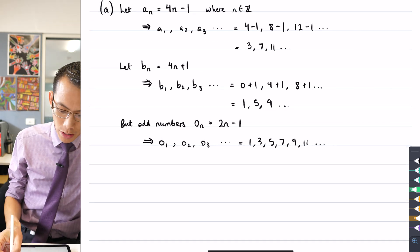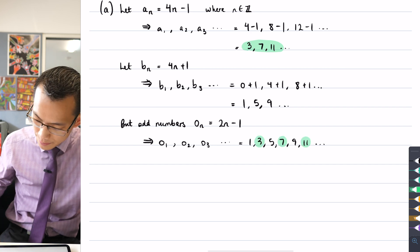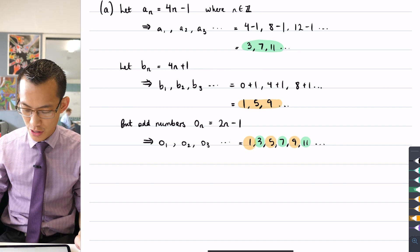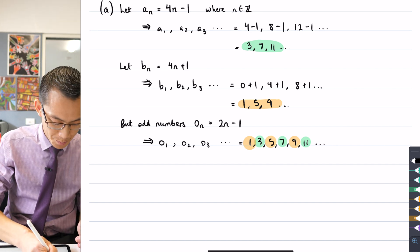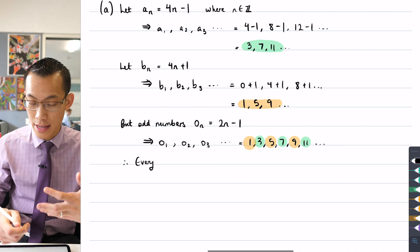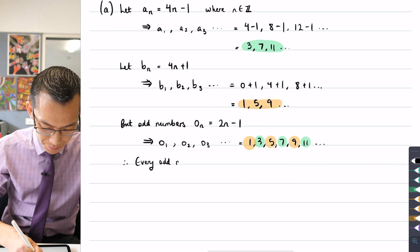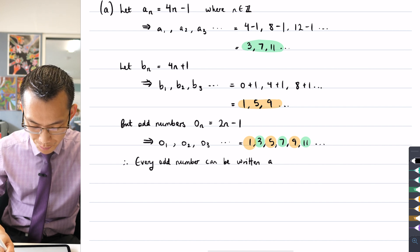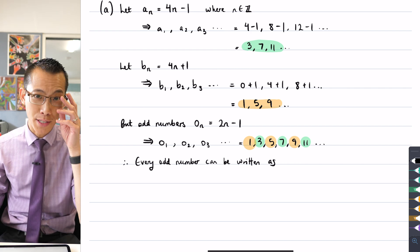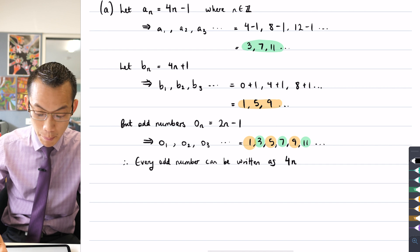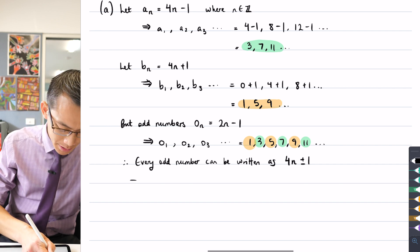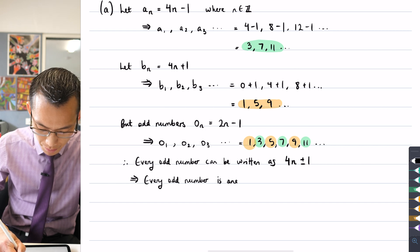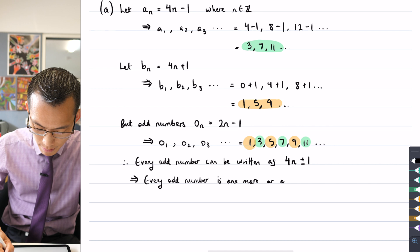You can see I've got 1, 3, 5, 7, 9, 11, and so on, which you can see perfectly lining up with the numbers we already have. There's 3, 7, 11, and then here's 1, 5, and 9. So you can see I haven't missed out any and I could just continue this pattern forever. So what I can say here is therefore every odd number, because I've captured everything in this O sub N series, every odd number can be written as either 4N minus one or 4N plus one.